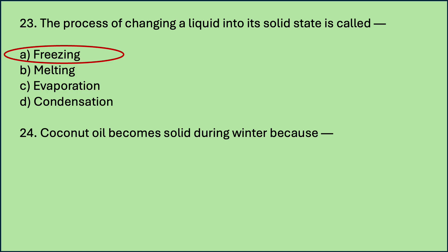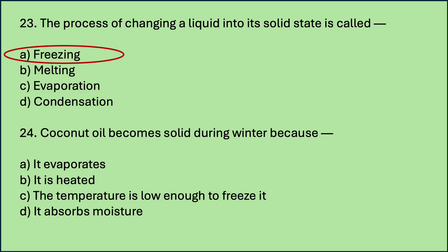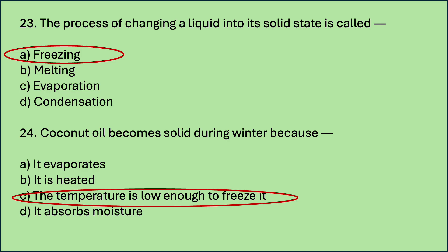Coconut oil becomes solid during winter because — options are: it evaporates; it is heated; the temperature is low enough to freeze it; it absorbs moisture. Which is the correct answer? Coconut oil becomes solid during winter because the temperature is low enough to freeze it.